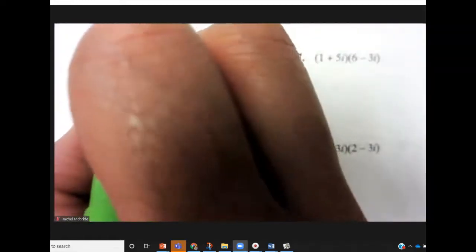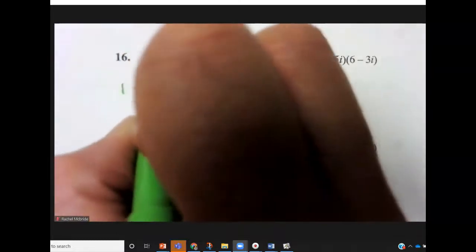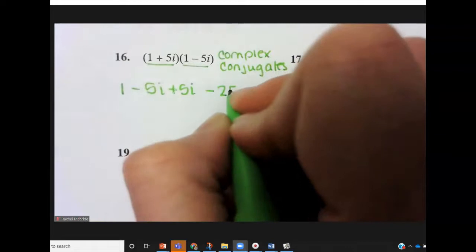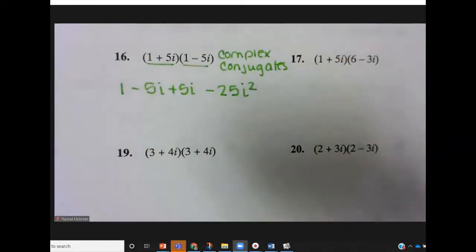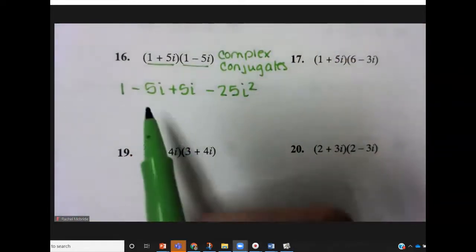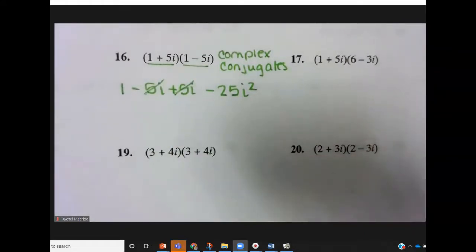This is also kind of like a factored form of a difference of squares. So you do your foil which is first, outer, inner, last.